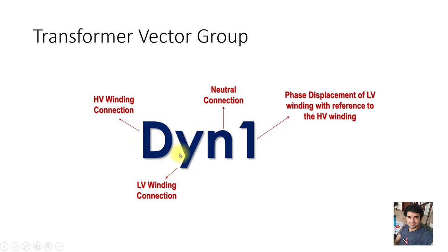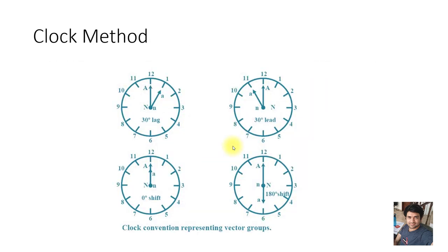There is a neutral connection available in the transformer. The phase shift between primary and secondary is indicated by the number. The notation 1 to 11 is derived from the clock method. A clock has digits from 1 to 12, and one complete circle is 360 degrees. Dividing by 12 gives 30 degrees per division, so '1' denotes 30°, '2' denotes 60°, and '3' denotes 90°.